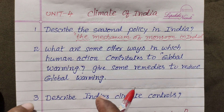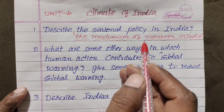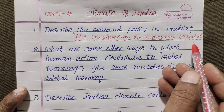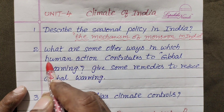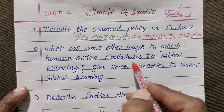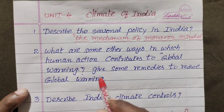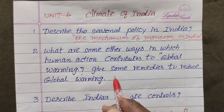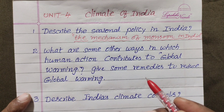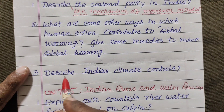Unit on Climate of India. Describe the seasonal policy in India and the mechanism of monsoon in India. What are some ways in which human action contributes to global warming? Give some remedies to reduce global warming.